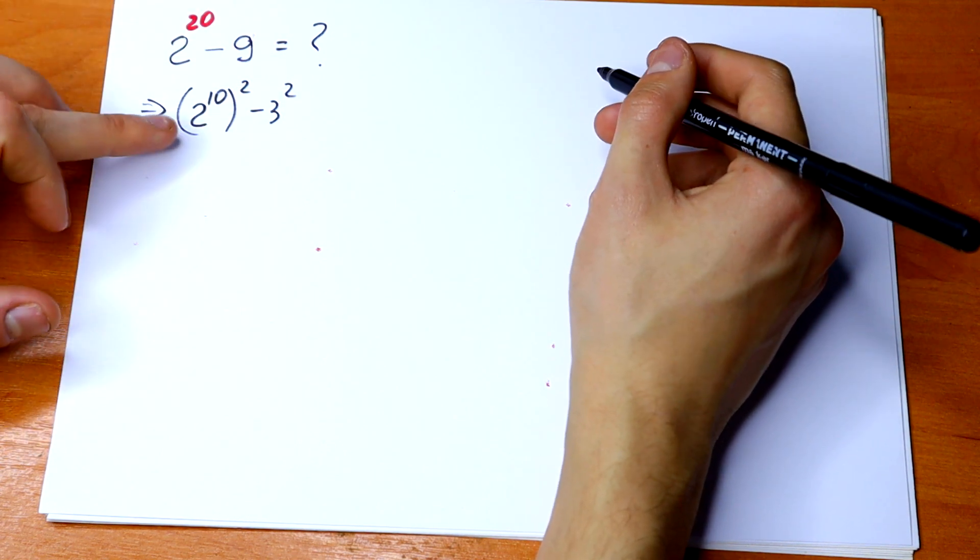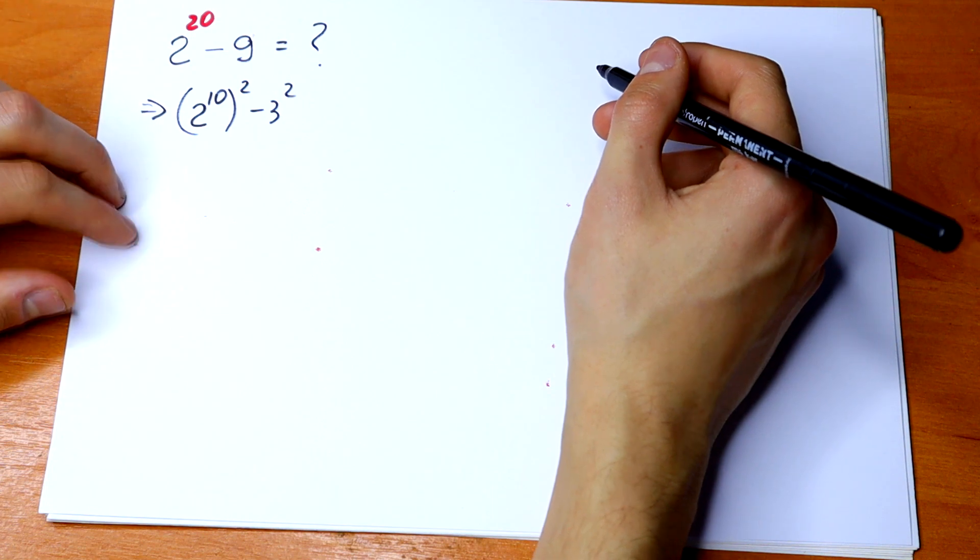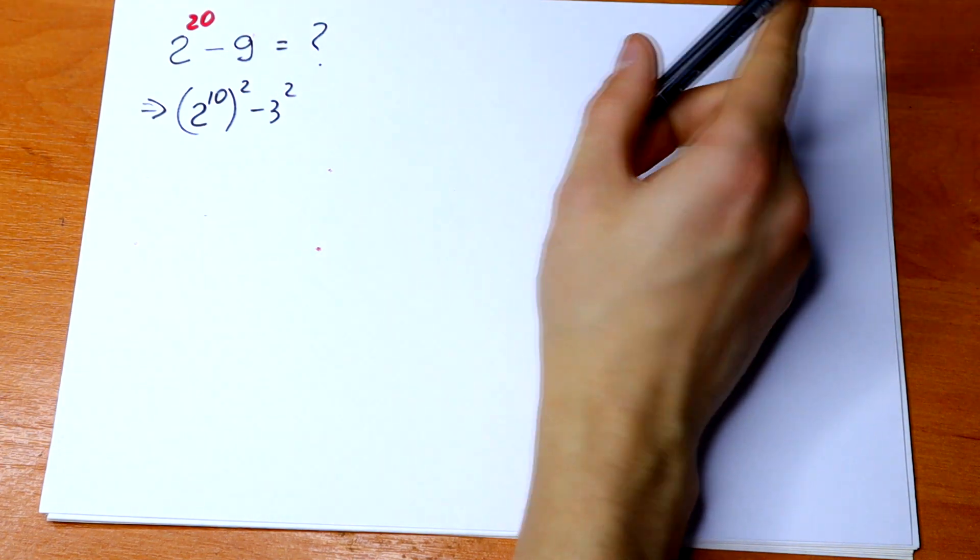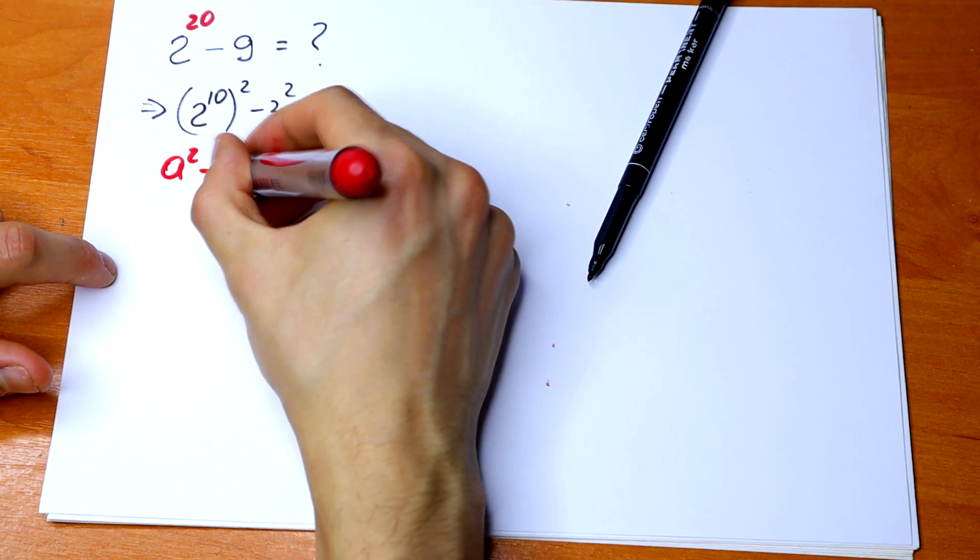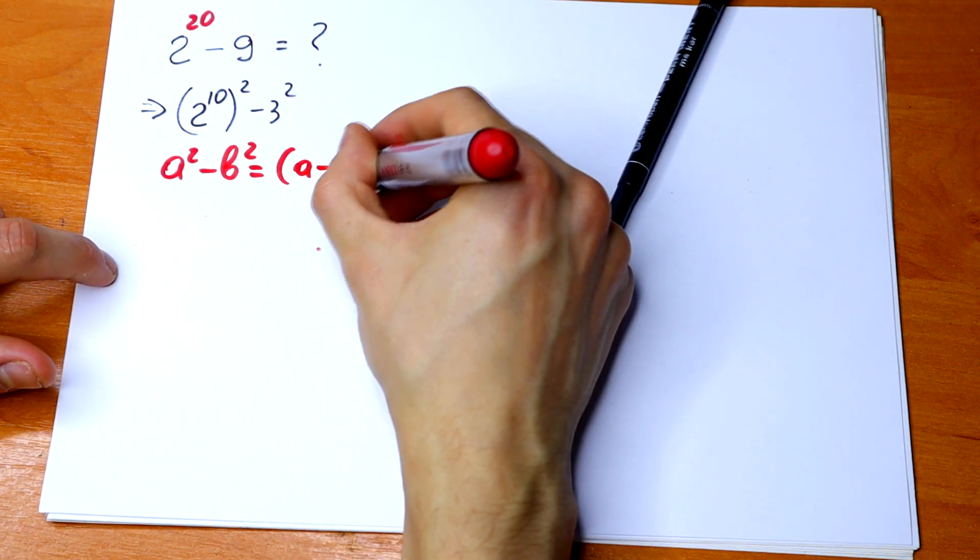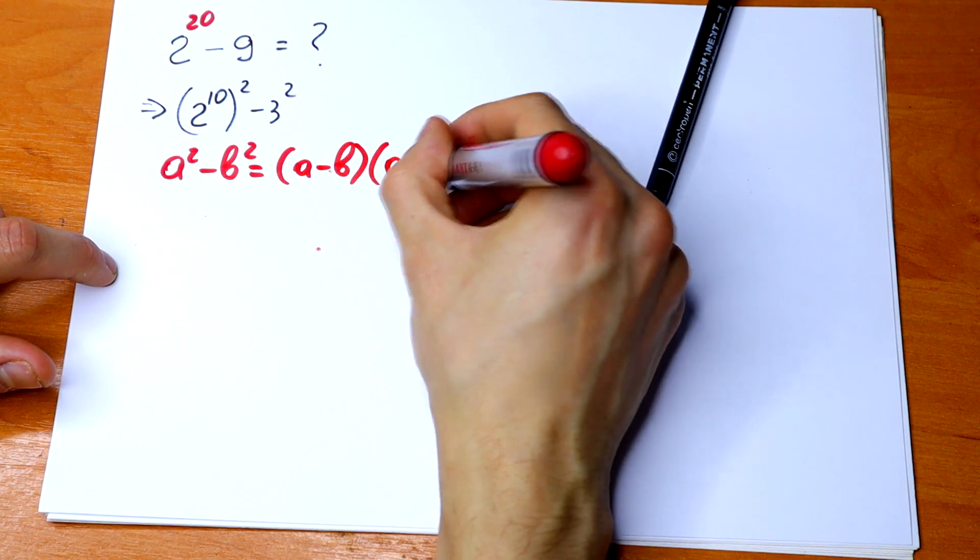So we have a squared minus b squared, so we can split it into an identity. It will be equal to a minus b times a plus b.